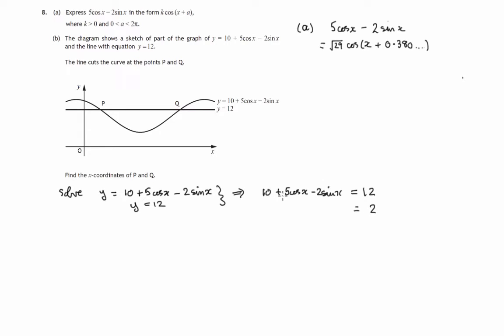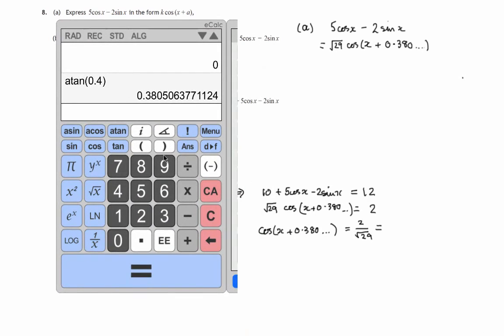This 10 will disappear. Notice the 5 cos x minus 2 sin x. We've already discovered we can write it as root 29 times the cosine of this angle x plus 0.380 and so on. And then dividing both sides by root 29 times the cosine of this angle will be equal to 2 over root 29. So let's find out what 2 over root 29 is. 2 divided by the square root of 29.